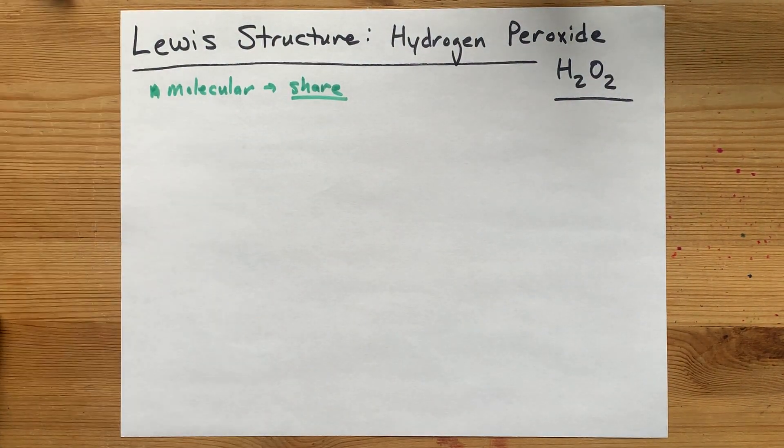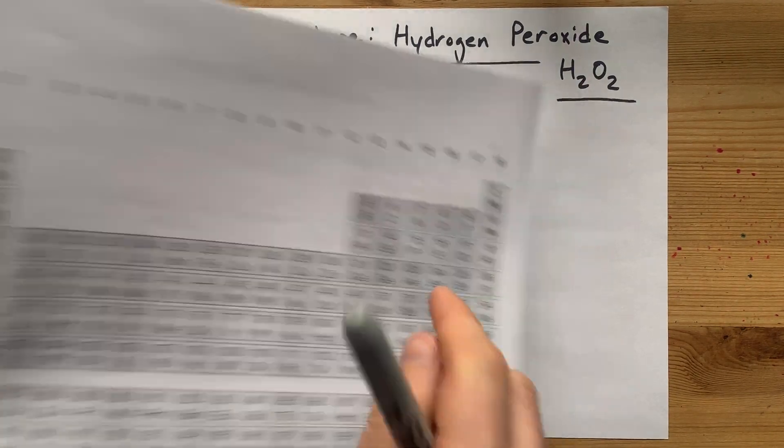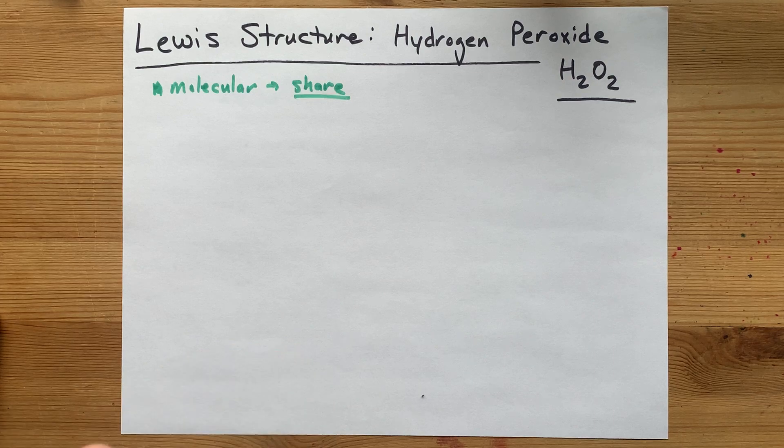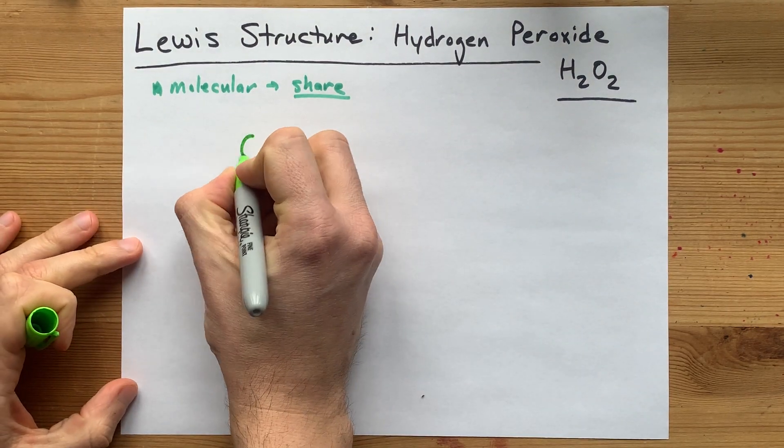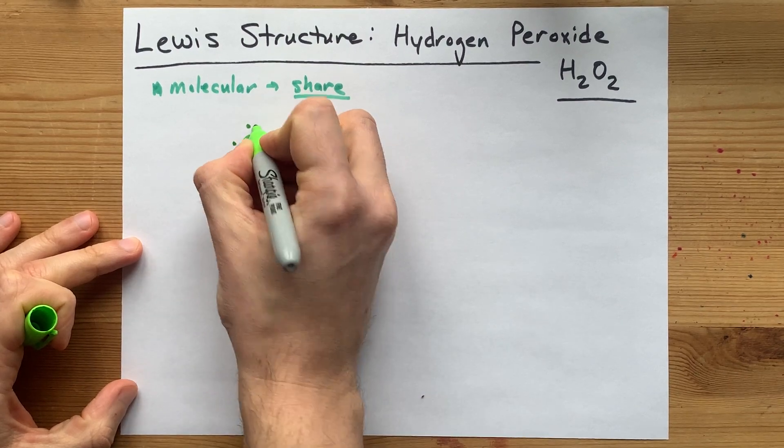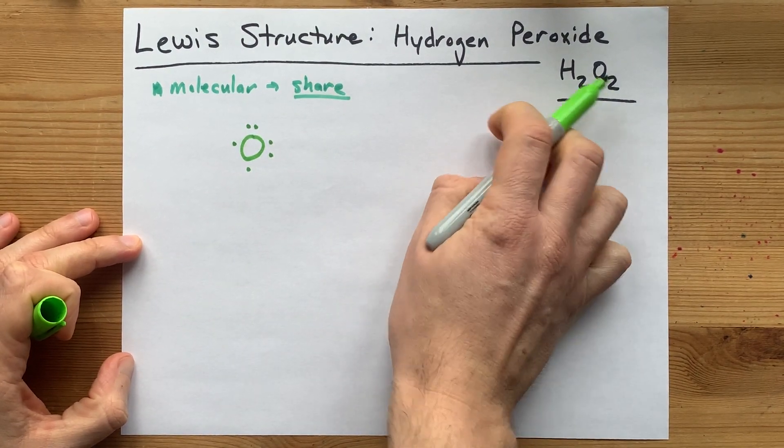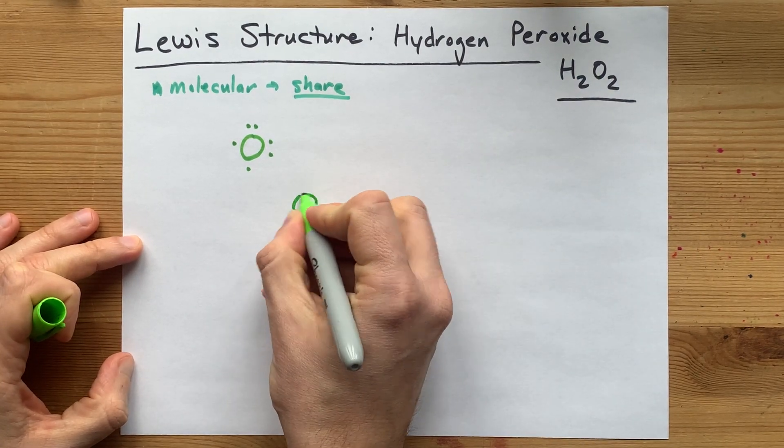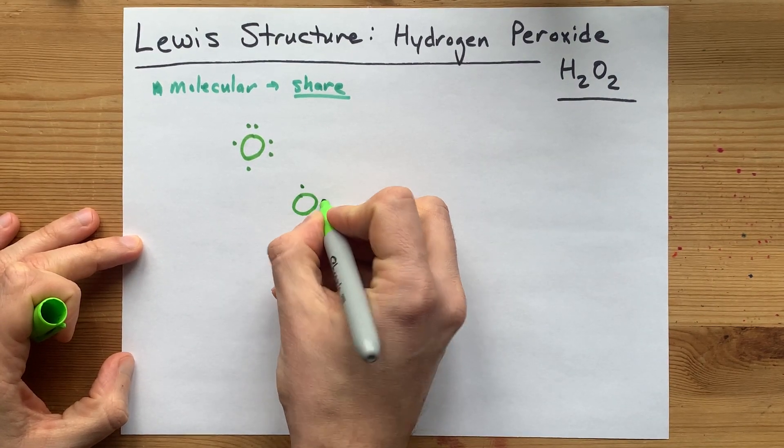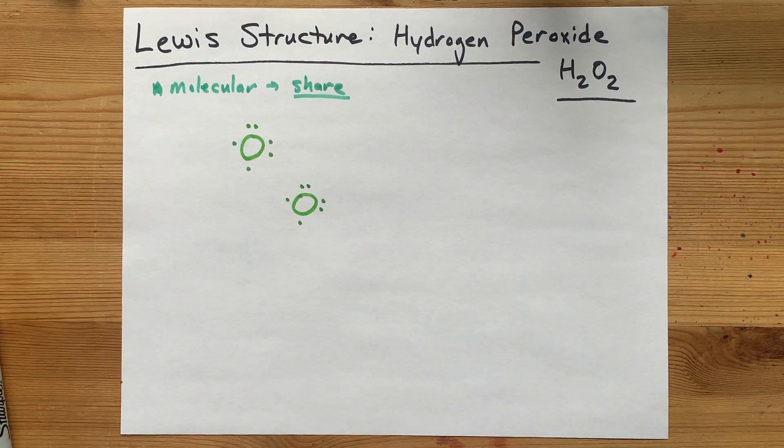Now to start with, oxygen is in group 16, so it brings six valence electrons each. Now I'm going to draw an O with 1, 2, 3, 4, 5, 6 valence electrons, and I need two of these oxygens, so I'm going to put another one somewhere else. 1, 2, 3, 4, 5, 6 valence electrons.